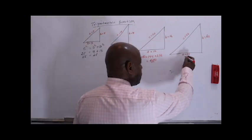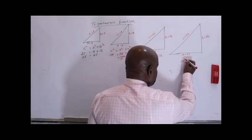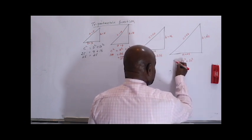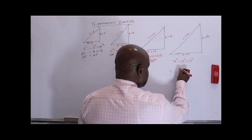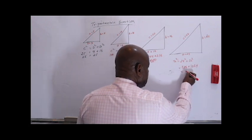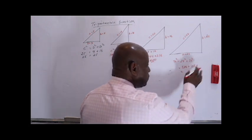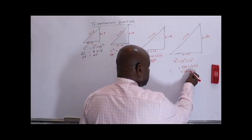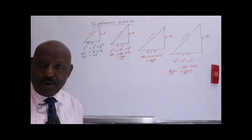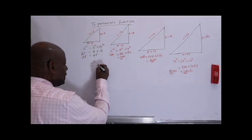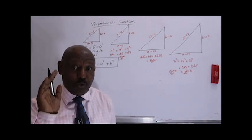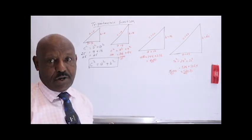12 squared is 144. 16 squared is 256. 20 squared is 400. 144 plus 256 gives us 400 again. And 24 squared is 576, 32 squared is 1024, and 40 squared is 1600. If you add 576 plus 1024, we get 1600. This is one very important concept to understand about trigonometric function.